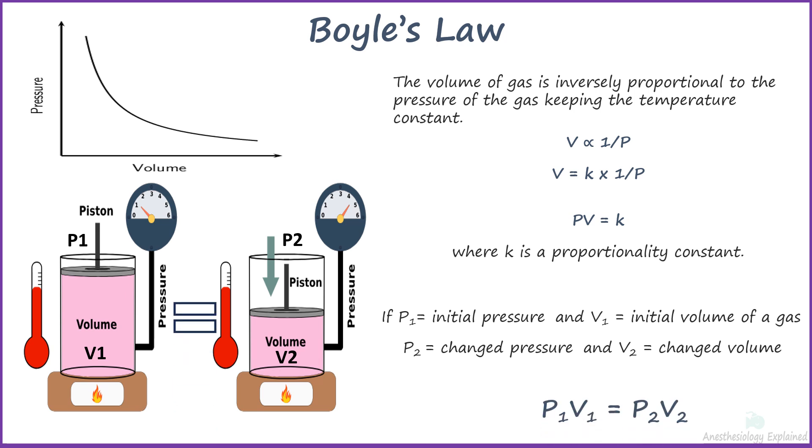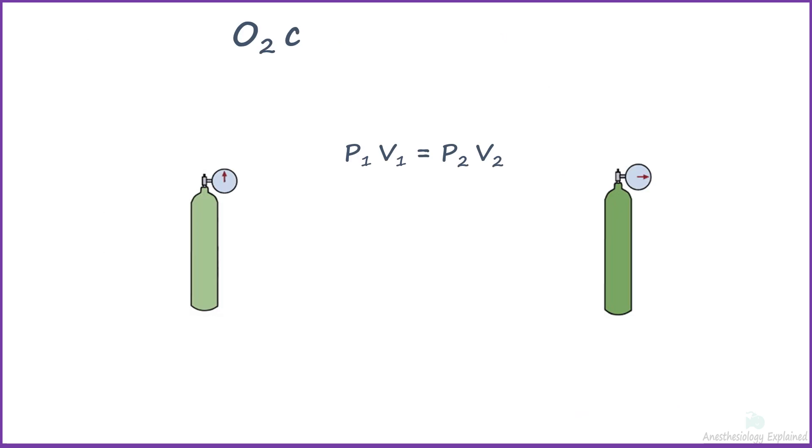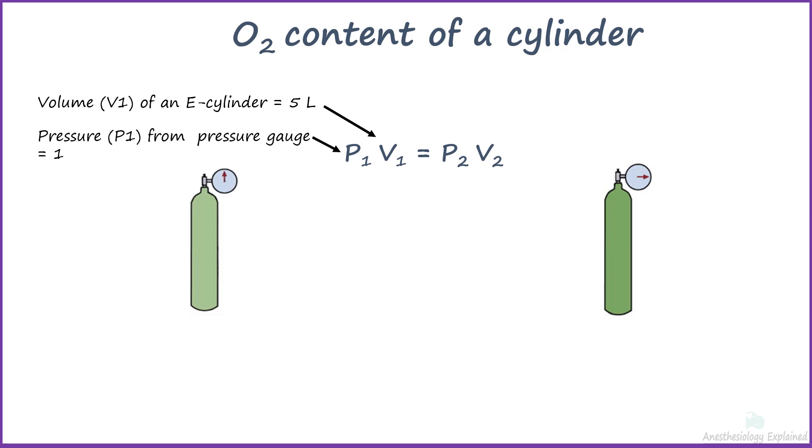This relationship is very useful to determine the volume of any gas at any given pressure in the cylinder. We can apply Boyle's law to measure the cylinder content based on the pressure gauge reading. A typical E-type cylinder has an internal volume of 5 liters. This is the volume V1 of an E-cylinder. The reading on the pressure gauge gives us P1 for that volume, let's say 1500 psi since the cylinder is being used.